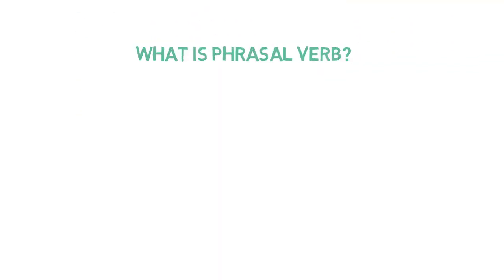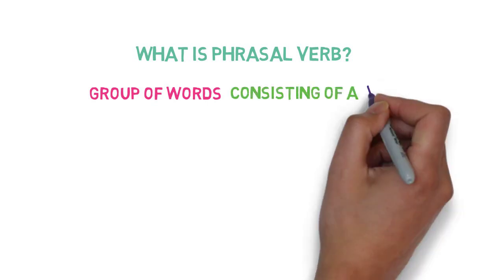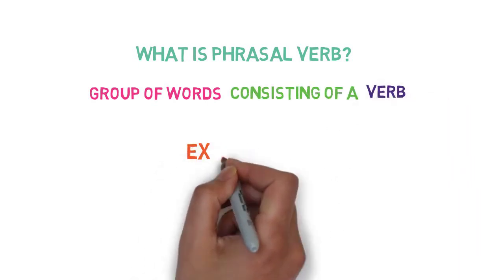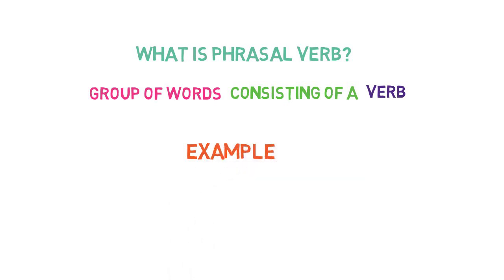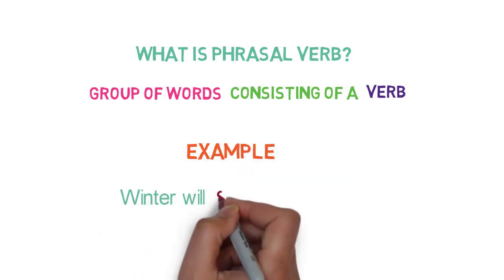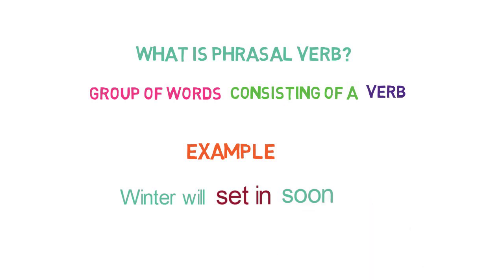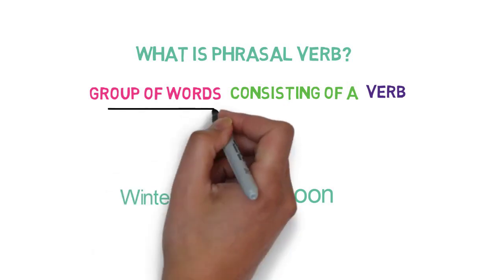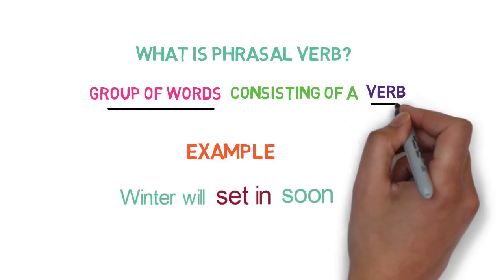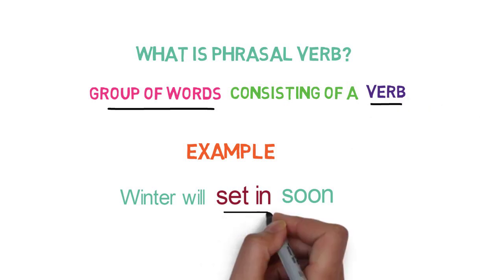What is a phrasal verb? We know that a phrase is a group of words. A phrasal verb is a group of words consisting of a verb. Let's look into a sentence example to make things clear. 'Winter will set in soon.' Here, 'set' is a verb and 'in' is an adverb in this context. If we combine both, then it is a group of words and it consists of a verb. Hence, it is a phrasal verb.